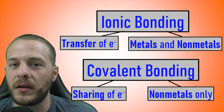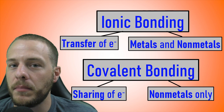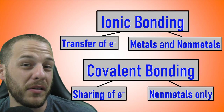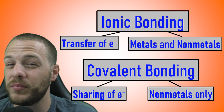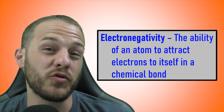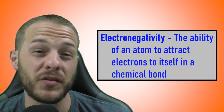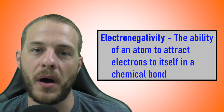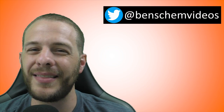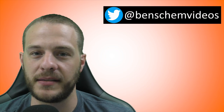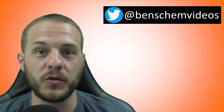Why does ionic bonding occur between metals and nonmetals, and why does covalent bonding occur between nonmetals only? The answer has a lot to do with electronegativity, which is the ability of an atom to attract electrons to itself within a chemical bond. The type of bond that will form between two elements is determined by the difference in electronegativity between those two elements.